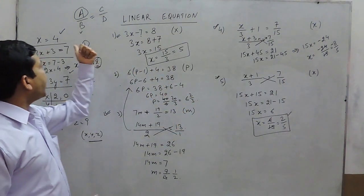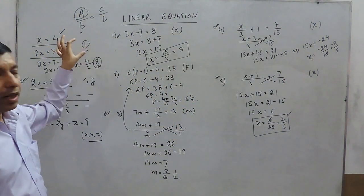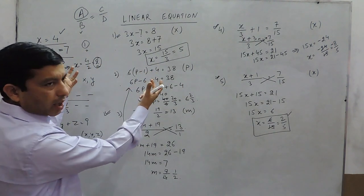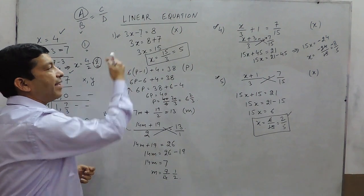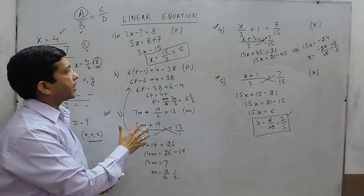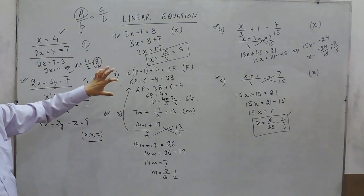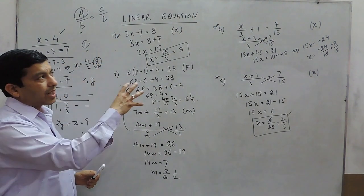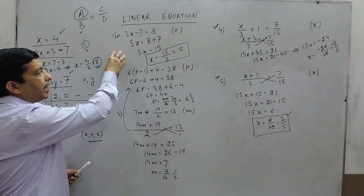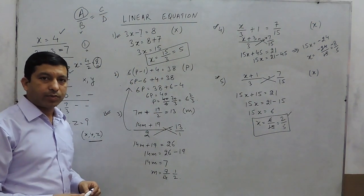So the meaning of a linear equation in one variable is: we find the value of the variable for which the left hand side and the right hand side are equal — that is the solution. In the next video we will talk about how a statement can be converted into a linear equation having one or more than one variable. Thank you.